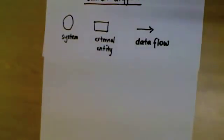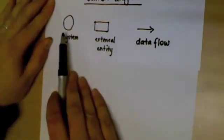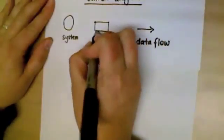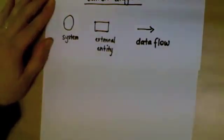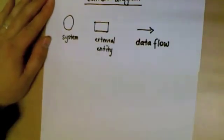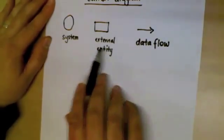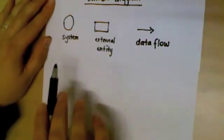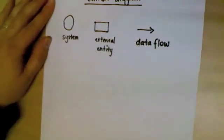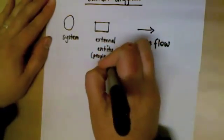The first diagram we're going to look at is the context diagram. In the context diagram there are only three symbols: a circle to indicate our system, a rectangle to indicate our external entity, and an arrow to indicate our data flow. All we're really mapping is the data that moves from our external entities into our system and from our system to our external entities. Our external entities are people or other systems.